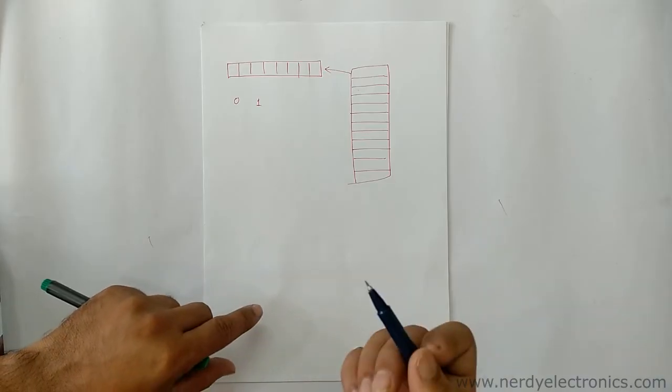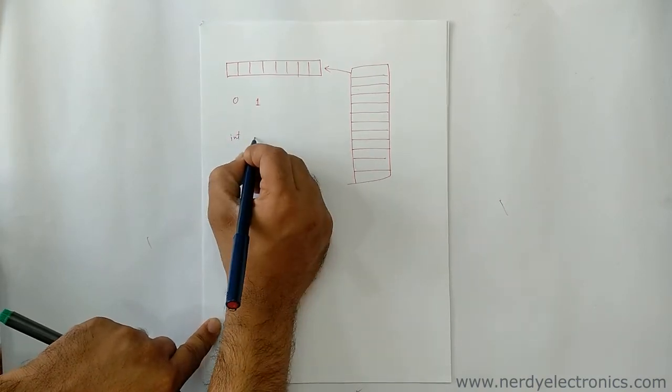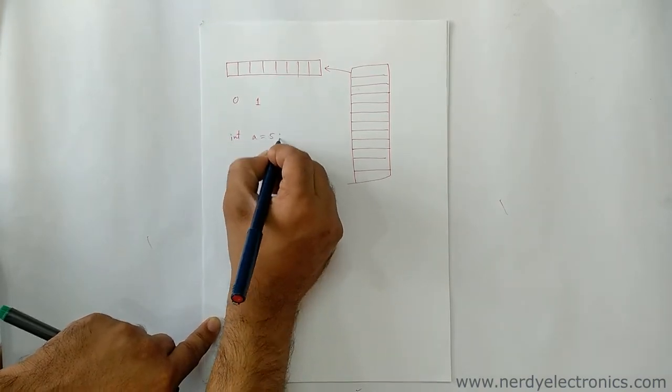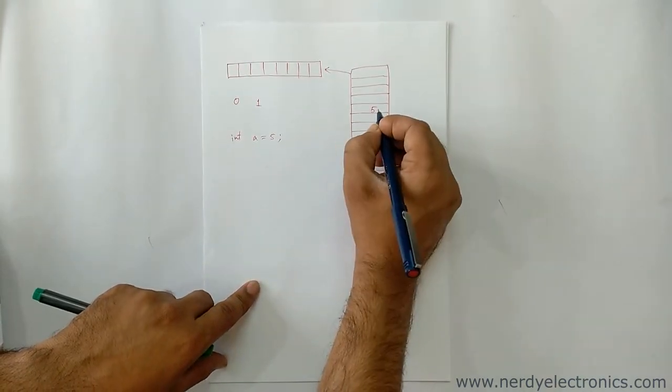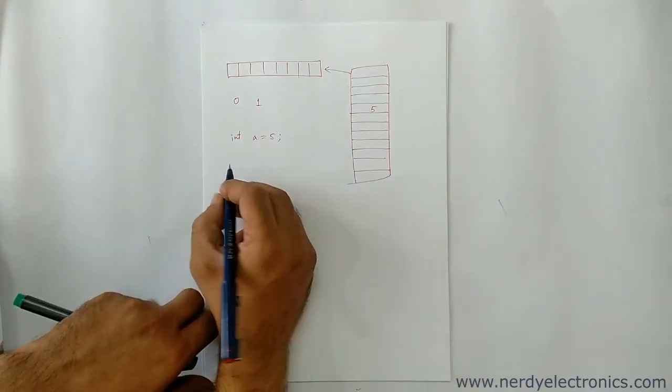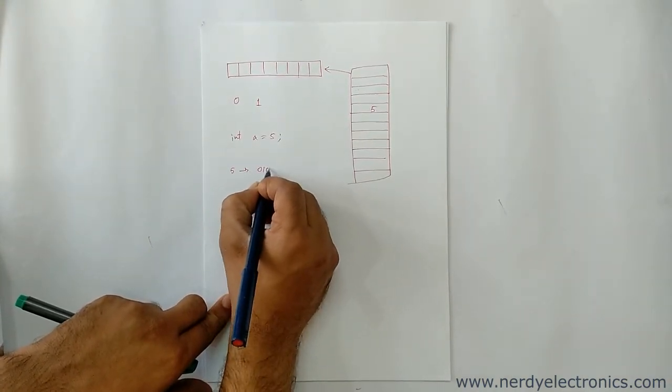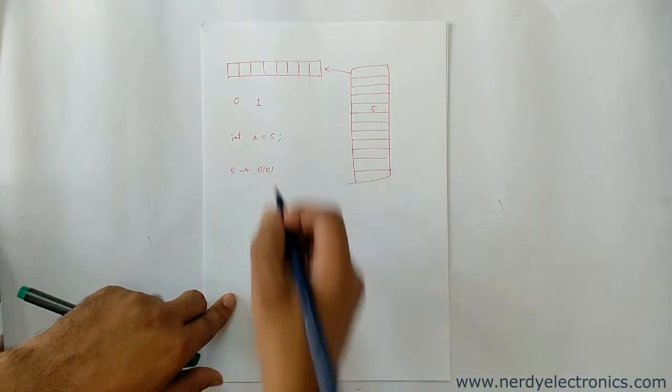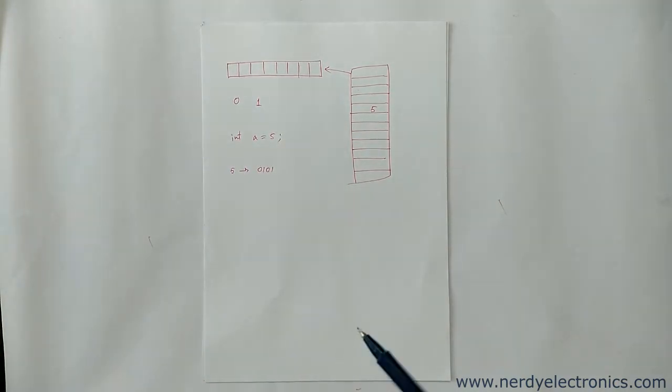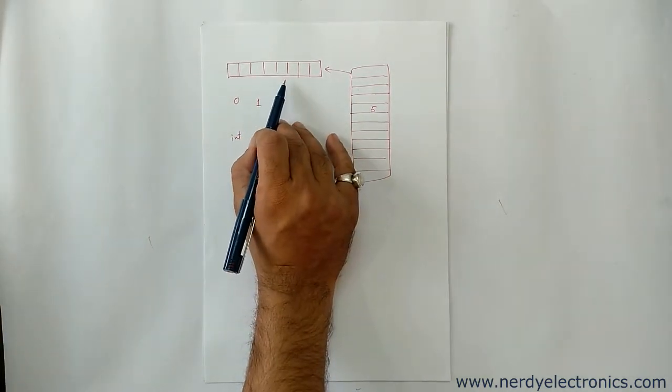So when we write something like int a equals to 5, it's not that 5 is stored directly here. What happens is 5 gets converted to the binary form. The binary form of 5 is 0 1 0 1. We will see how this conversion happens in the next video. But for now, what you need to know is this 0 1 0 1 is what is getting stored here.